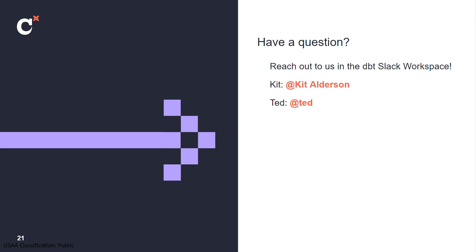Audience question: You said you migrated to dbt in about a year — to what extent of the organization are you talking about? With 16 million customers, I assume there are a lot more than two data engineers. What degree did the migration happen, and if it was enterprise-wide, what did you do to get everybody on board? Response: Our specific database was going away, so there was a forced migration — that helps those conversations along. The cost slide shown was specific to our organization, property and casualty within the company. We also have bank and life insurance divisions whose journeys might look a little different.